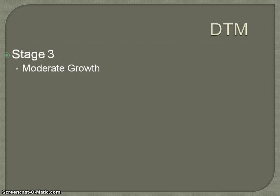We're moving on to Stage 3 of the demographic transition model. Stage 3 is characterized by moderate population growth. What begins to happen is you have a steady decline in the crude birth rate. As we saw in the previous video, the crude birth rate and death rate were coming back together. Birth rates begin to react to death rates.